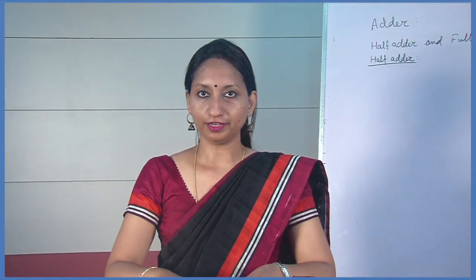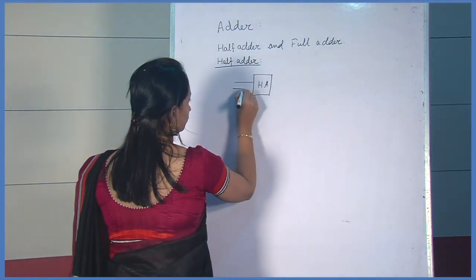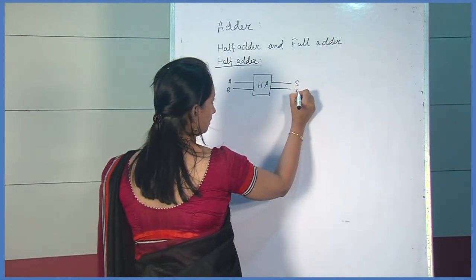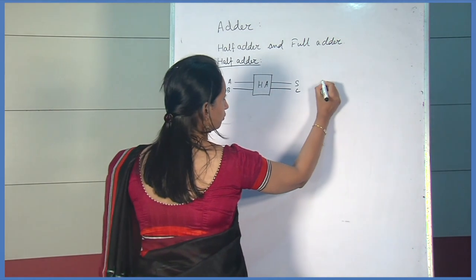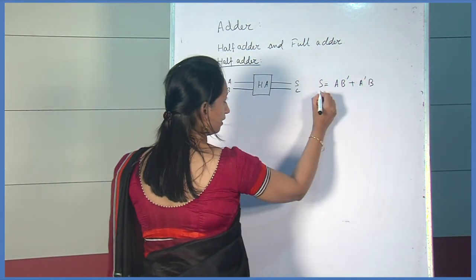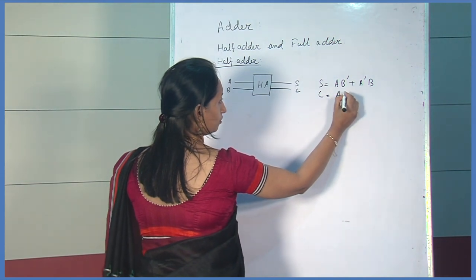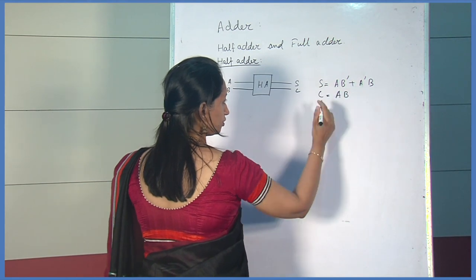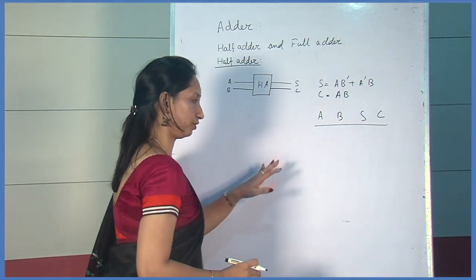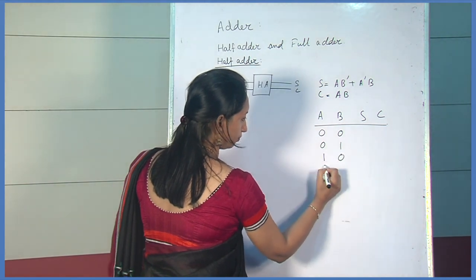Let us see the block diagram of a half adder. This is a half adder — two inputs and two outputs. Suppose A and B are the inputs, and S and C are the outputs. The output S equals A·B̄ plus Ā·B. S is known as sum and C is known as carry, where carry is A into B. For the two inputs A and B, the combinations are 0,0 — 0,1 — 1,0 — 1,1.